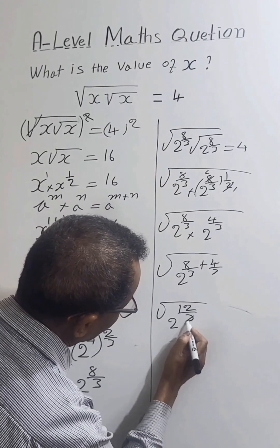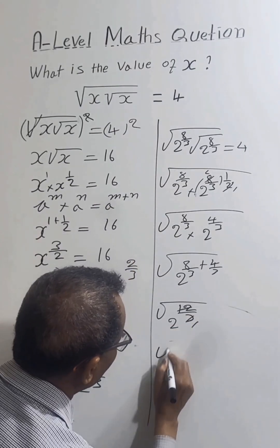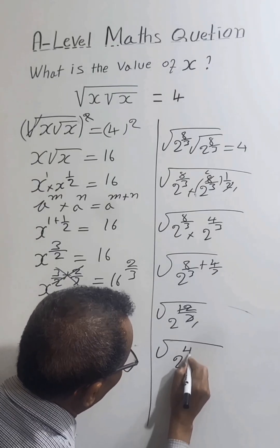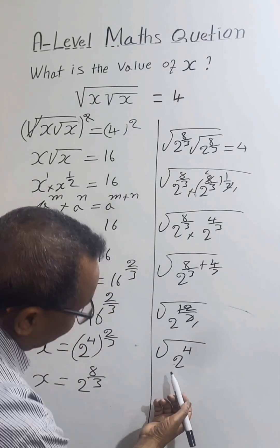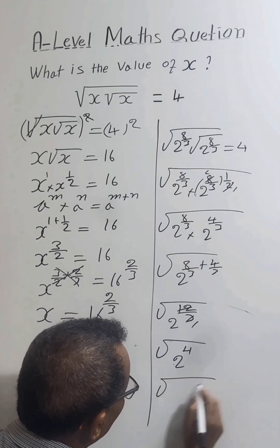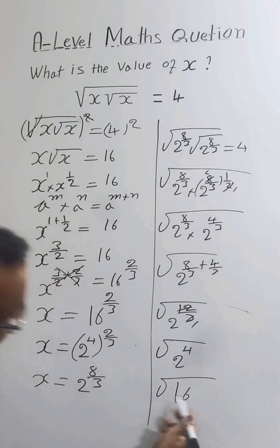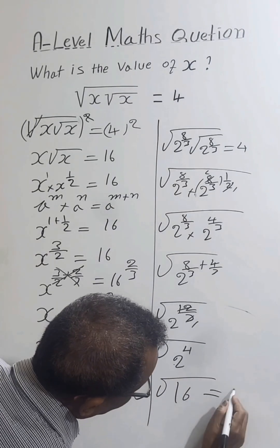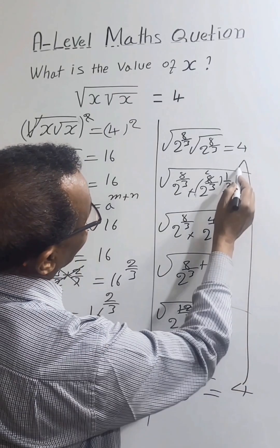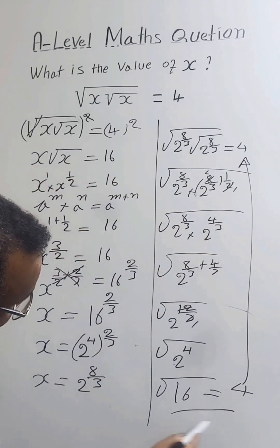So this will be 12 over 3, which simplifies to 2 to the power 4. And 2 to the power 4 is 16, so the square root of 16 is 4. This is equal to the right-hand side, confirming our answer is correct. Thank you very much.